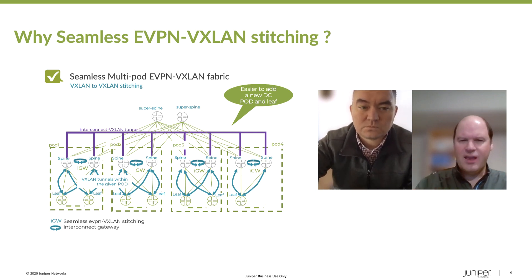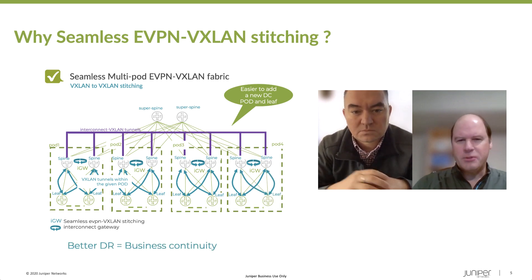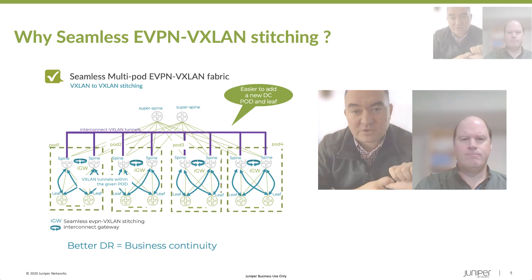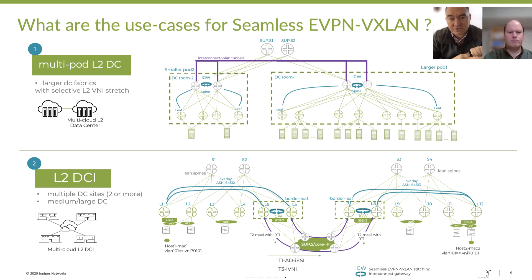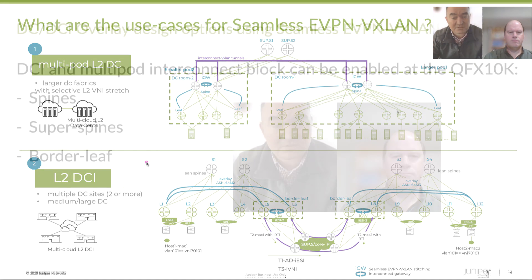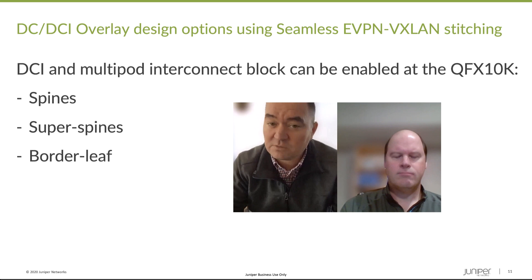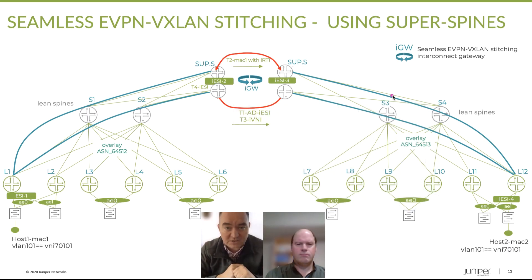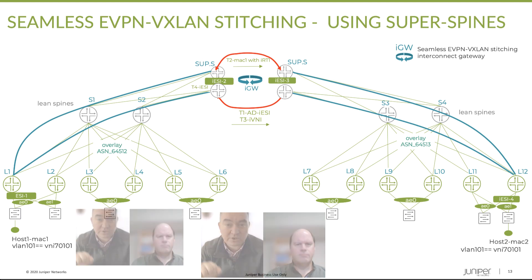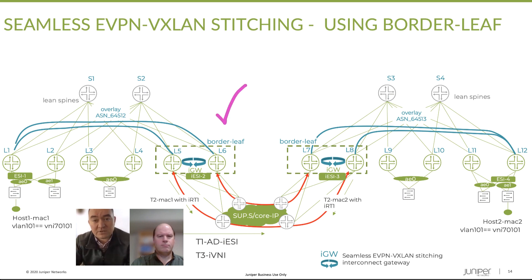So we've mentioned two use cases: multipod datacenter architectures between, for example, smaller rooms and bigger rooms within the same premises, and then the second one is DCI — two sites or more. If you have a lot of devices on each of the sites, that's where seamless EVPN VXLAN stitching makes sense. From the design point of view, we identify a couple of options. EVPN VXLAN stitching can be enabled not only at the spine level, but you may consider the same functionality at the super-spine level in a five-stage architecture, or at the border leaf level if your design is an edge-routed, fully distributed model — where the border leaves deliver the stitching gateway capabilities.